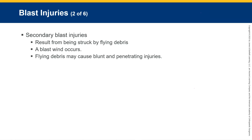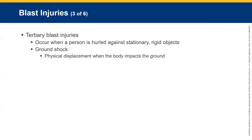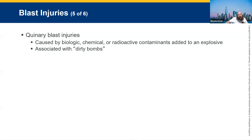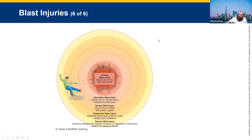Secondary blast injuries involve flying debris. There are multiple levels of blast injuries — primary blast is the actual explosion, and then you have all these other blast injury types that can occur.